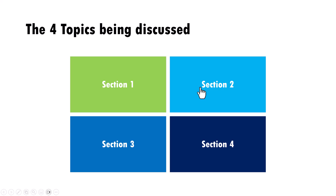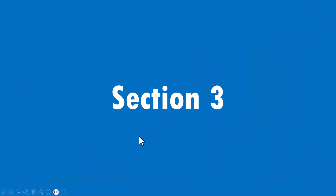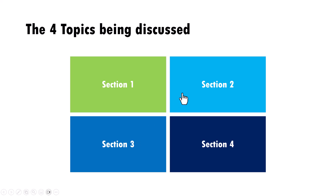Let's say I want to skip to section 3 because that is the preference of the audience. I can click on section 3, go ahead and explain it, and when I hit Enter I come back to the orientation slide. This gives control to the audience to decide what they want to learn about in the presentation.